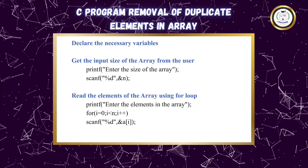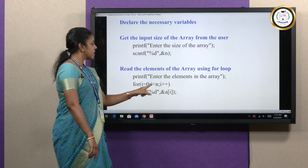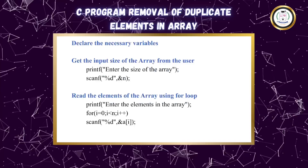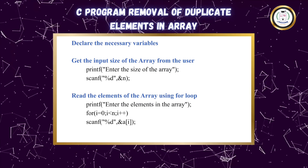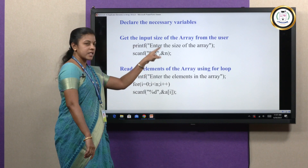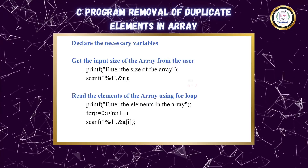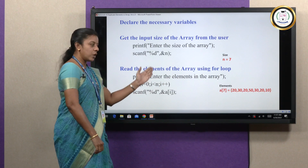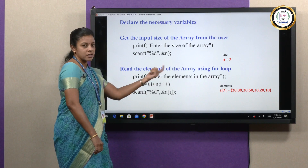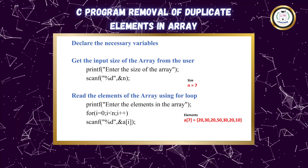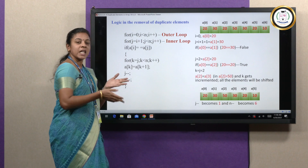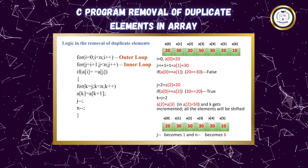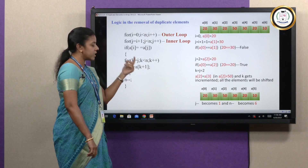So for this, we have two loops: an outer loop and an inner loop. After that, we check one condition, and if that condition is true, we enter a third for loop inside. The outer loop is: for i equal to 0, i less than n, i plus plus. When i equals 0, we enter the inner loop for j equal to i plus 1, so j starts at 1.